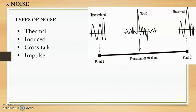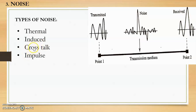The third cause of impairment is noise. The types of noise are: thermal noise — an extra signal created by random motion of electrons; induced noise — noise produced by another circuit; crosstalk — when one wire touches another, causing you to hear someone else's conversation on the phone; and impulse noise — a spike or high-energy signal in a short duration.